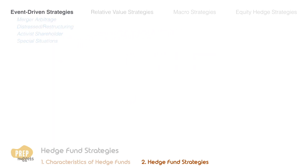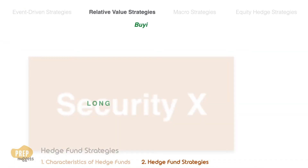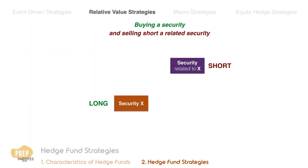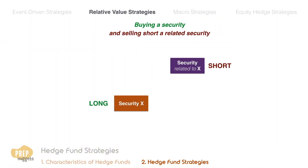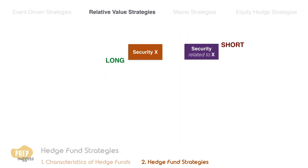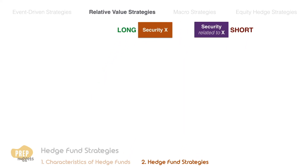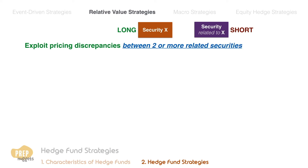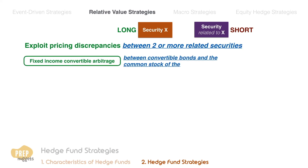Relative value strategies involve buying a security and selling short a related security with the goal of profiting when a perceived pricing discrepancy between the two is resolved. Essentially, the strategy is to exploit pricing discrepancies between two or more related securities. Examples include fixed income convertible arbitrage, which is to exploit pricing discrepancies between convertible bonds and the common stock of the issuing companies.